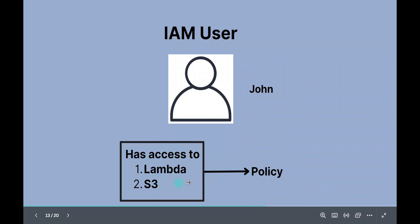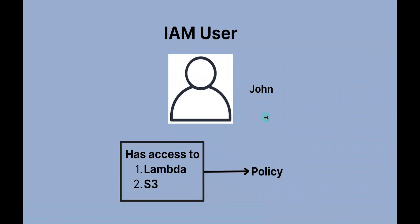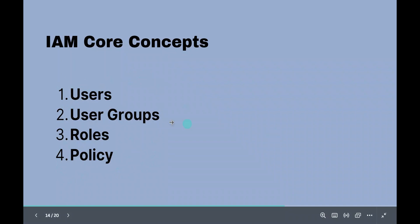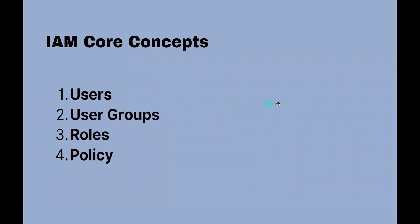The access part — defining what access John has — is called an IAM policy. We will discuss all these core concepts in the next slide. So I hope you understood the use case and requirement for IAM. There are four core IAM concepts: users, user groups, roles, and policies. These are the four important concepts in AWS IAM, and we will be discussing each one in depth.